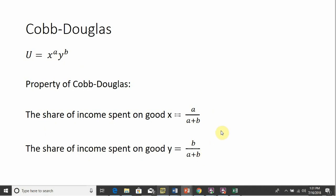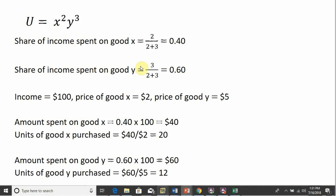Okay, so let me show you how you can use this. Say we have a utility function, x squared times y cubed, and let's try to find the utility maximizing consumption bundle. The share of income spent on good x is just going to be 2 divided by 2 plus 3, and that is 2 fifths or 0.4. The share of income spent on good y is going to be 3 divided by 2 plus 3, or 0.6.